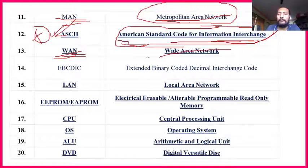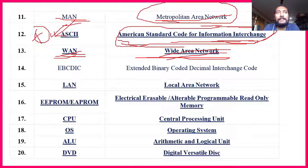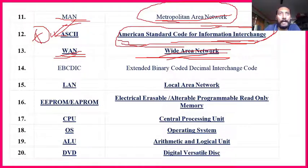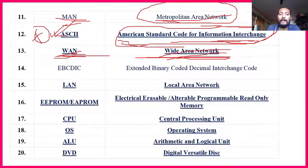WAN — Wide Area Network — is somewhat important. For example, if one company is present throughout Bangalore — not just one specific part like one neighborhood but the full area of Bangalore — that company's network covering the entire wide area is called Wide Area Network (WAN).